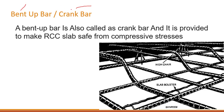You can call it a bent up bar or crank bar. A bent up bar is also called a crank bar and it is provided to make an RCC slab safe from compressive stresses. Here in this picture we have the bent up bar — it starts from one position, goes downward at one end, and continues in that direction. That's why it is called a crank bar.